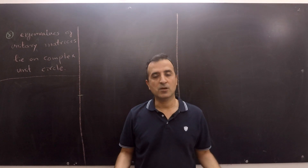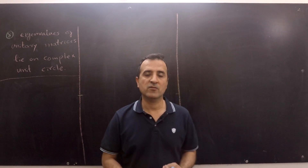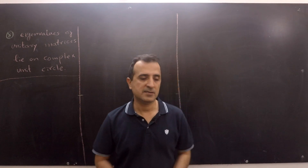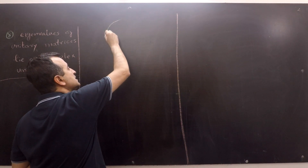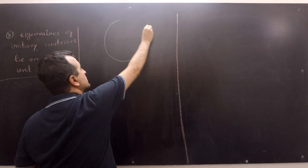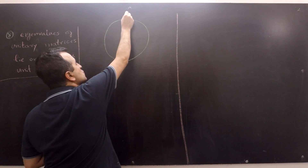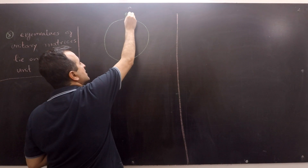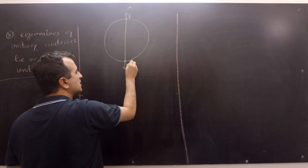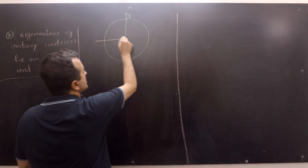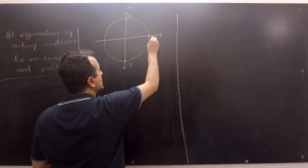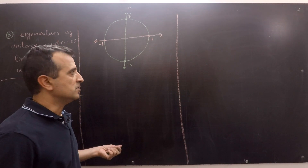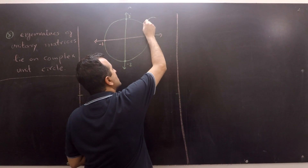This property of unitary matrices is very cool because it says that all the eigenvalues of our unitary matrices lie on the boundary of a complex unit circle. We have a circle — the unit circle — because its radius is equal to 1, with two axes going through it: an imaginary axis with iota and minus iota, and a real axis with 1 and minus 1. All the eigenvalues of our unitary matrices lie on this circle.